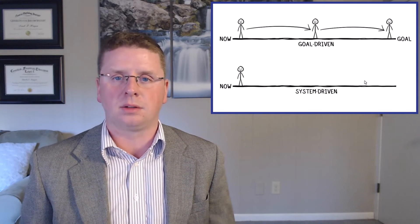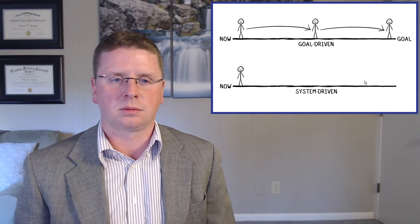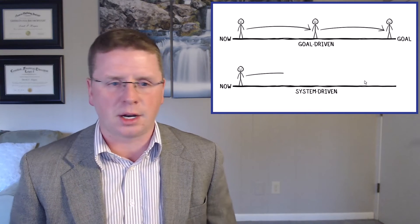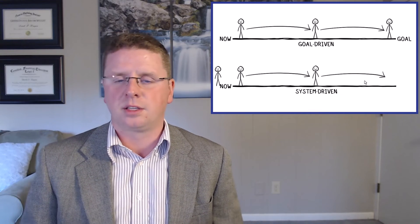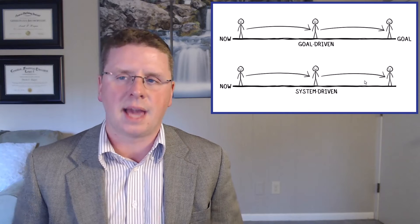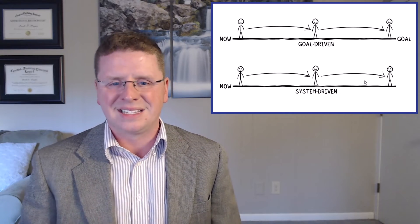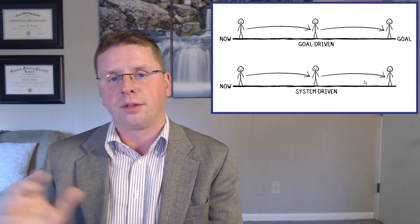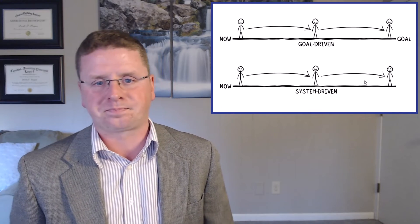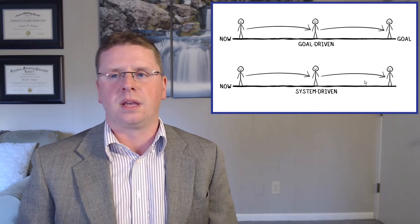Systems: this person is already happy, and along the way this person becomes happy and stays happy without having a goal. Because a system is something that you do every day. Systems are in your control; the result of the outcome are not.